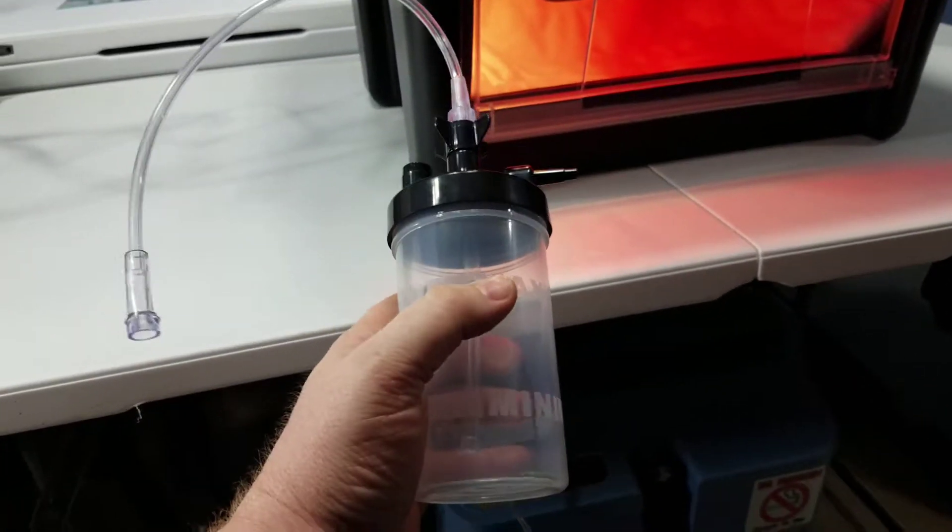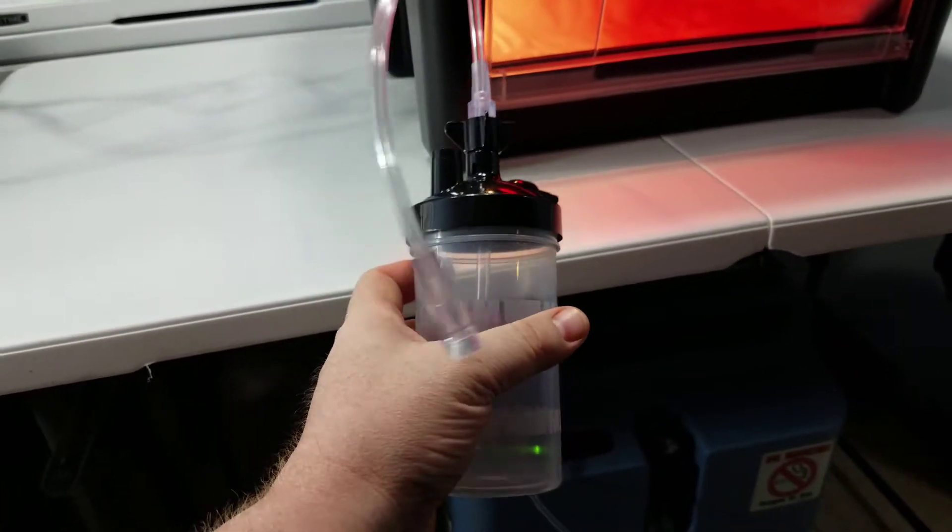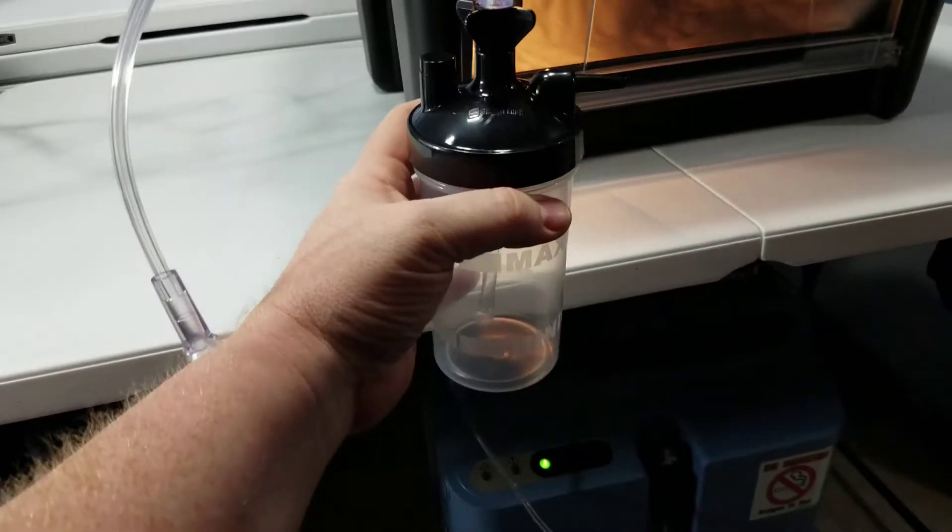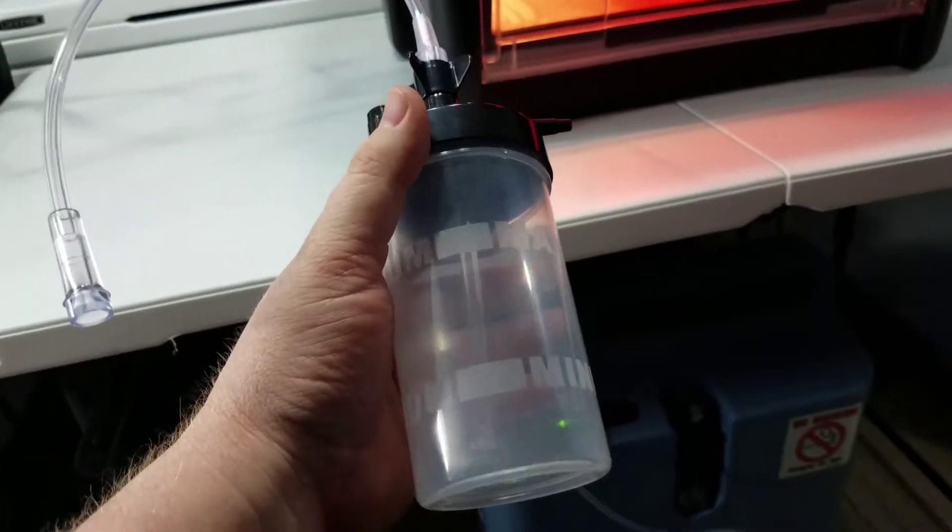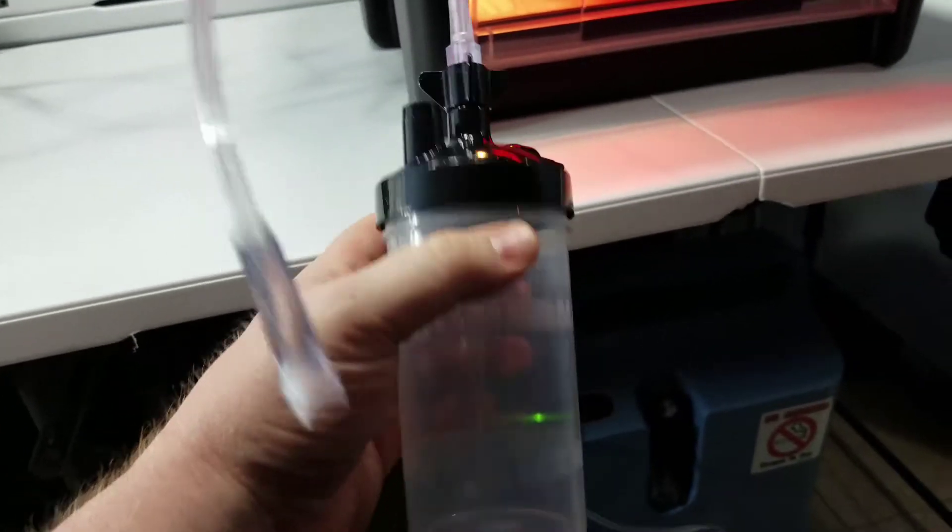Hi, this is Jake from lifelinepetsupplies.com. Today we're gonna cover hooking up a bubbler cup or bubble humidifier to an oxygen concentrator if you want to use that as a source of humidity. Pretty simple to do.